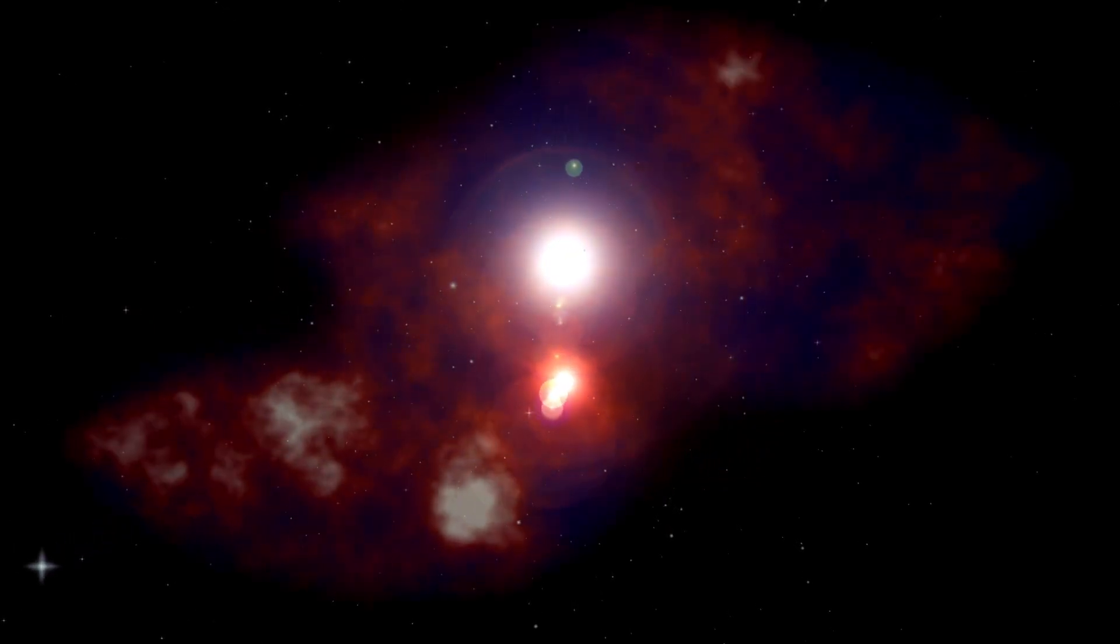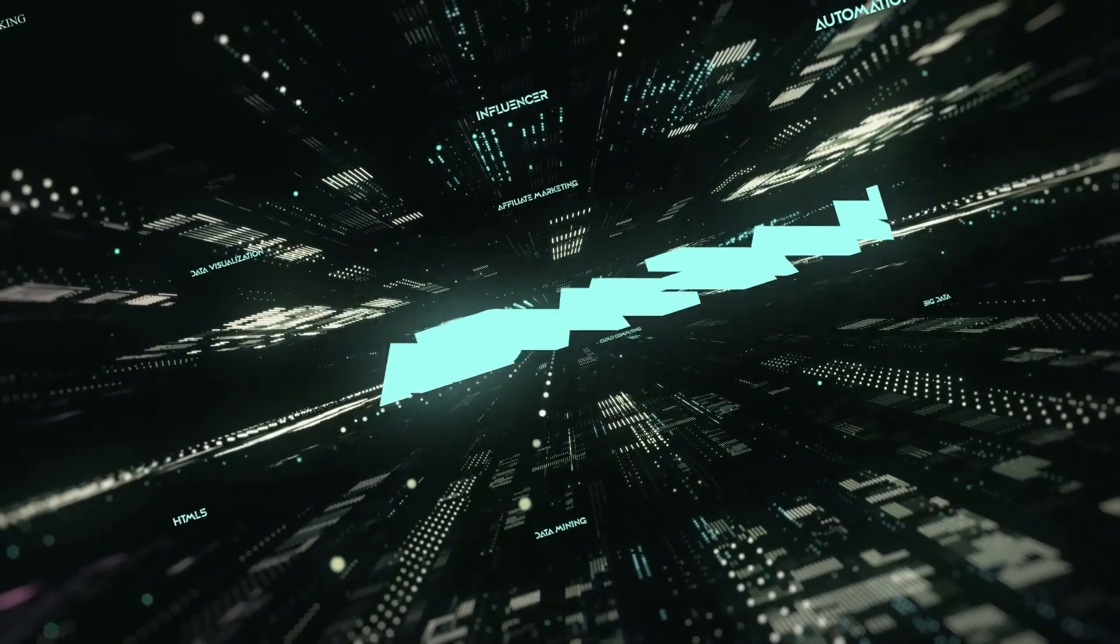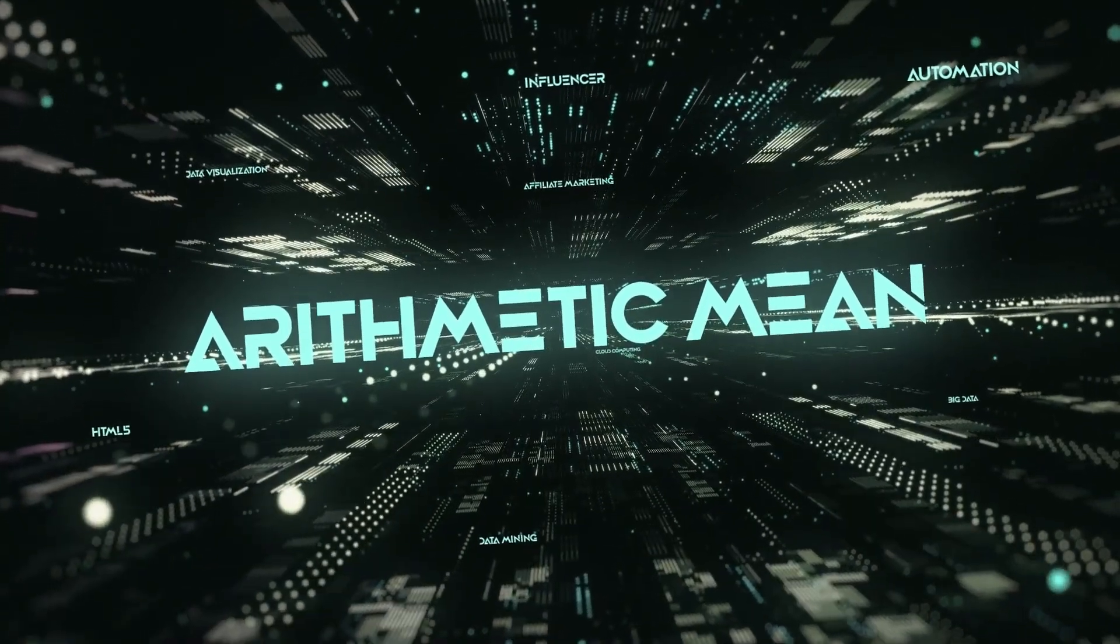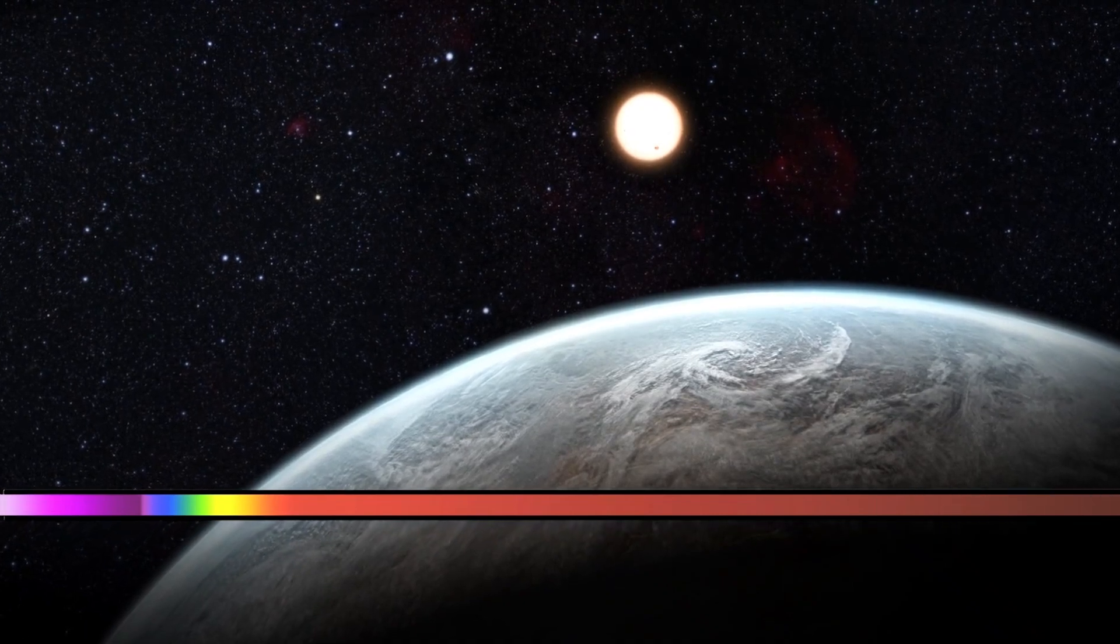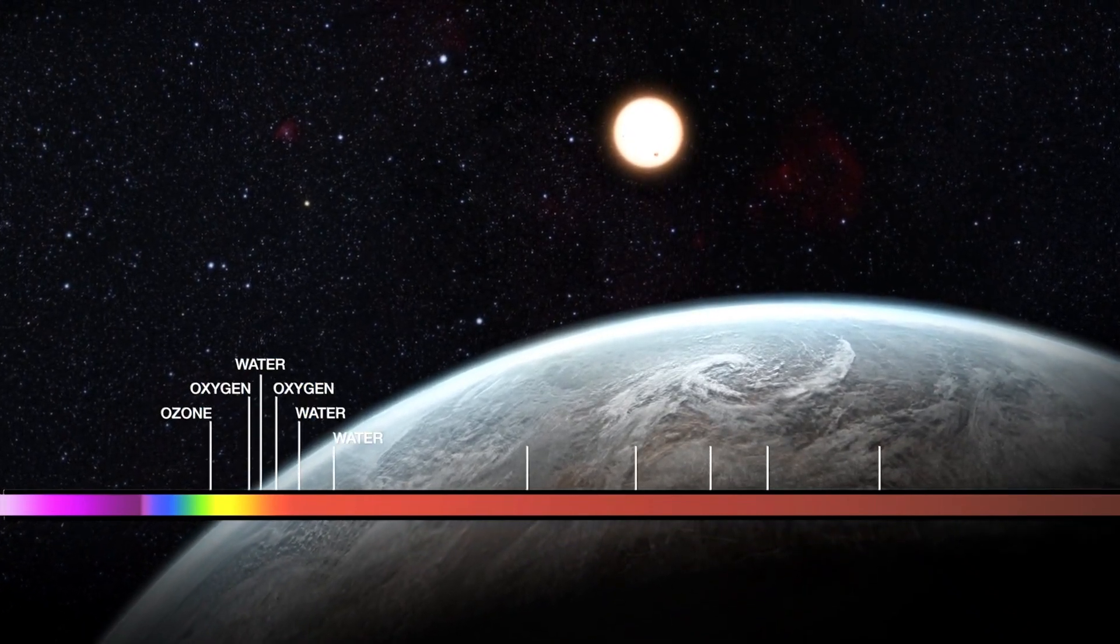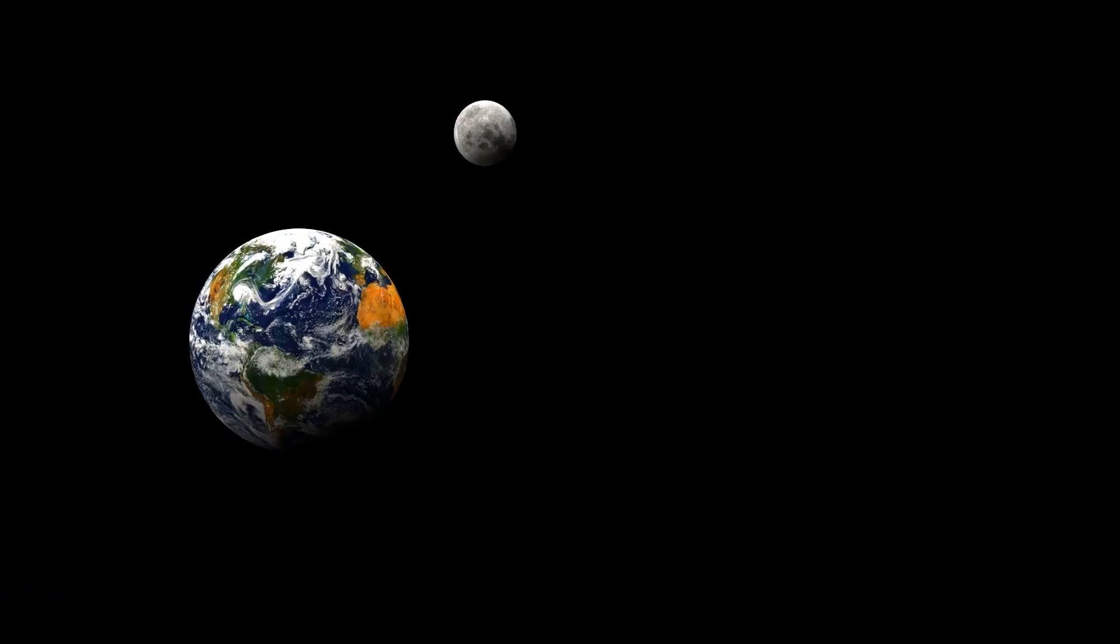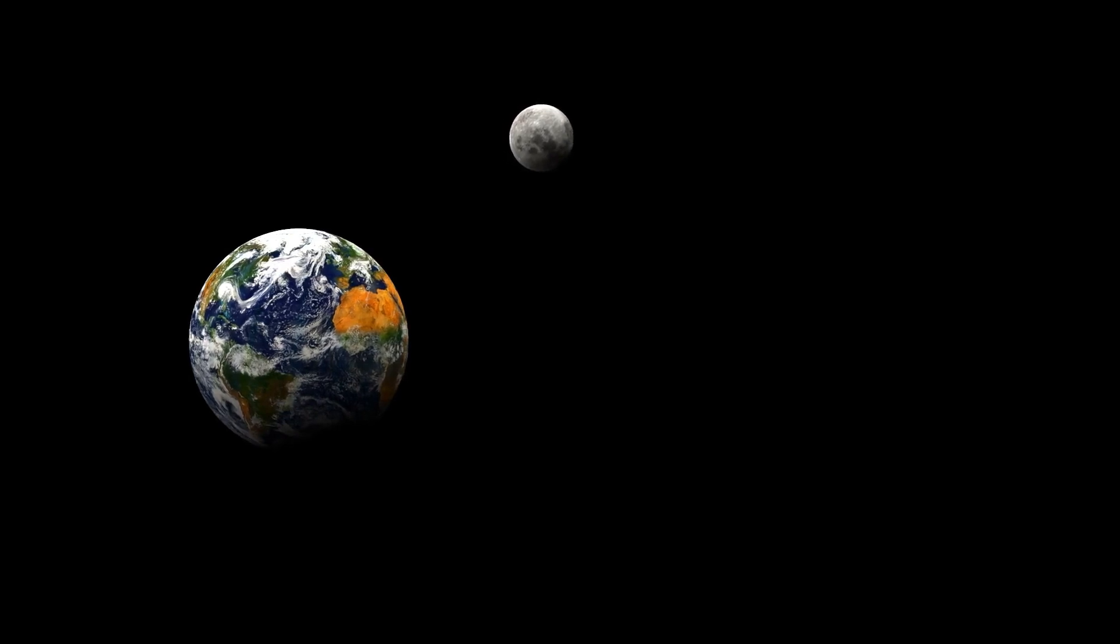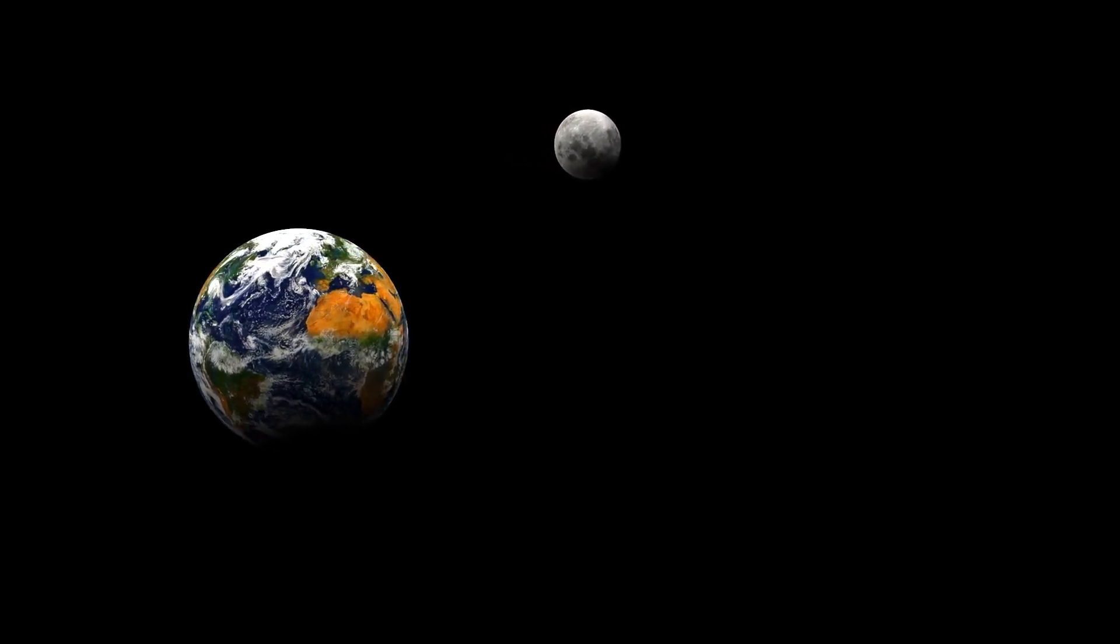For example, Proxima Centauri b, sometimes referred to as Alpha Centauri cb, is a super-Earth orbiting an M-type star. Don't worry if this sounds complex; this video is here to help you understand all the important parts. Planets classified as super-Earths are larger than Earth but still lighter than gas giants such as Neptune and Uranus. These unique planets, whether rocky or gaseous in composition, typically range in size from 2 to 10 times the mass of Earth.